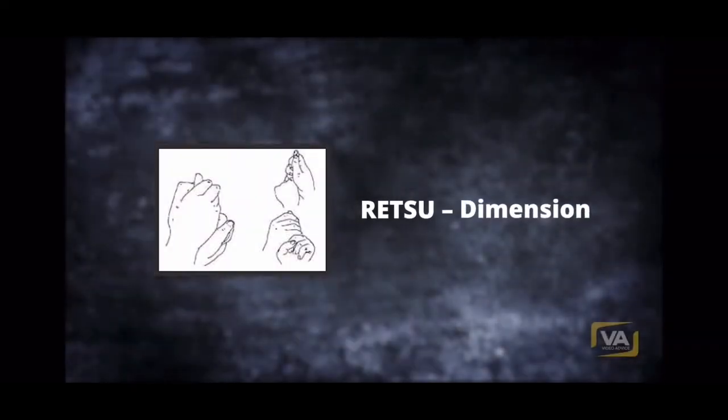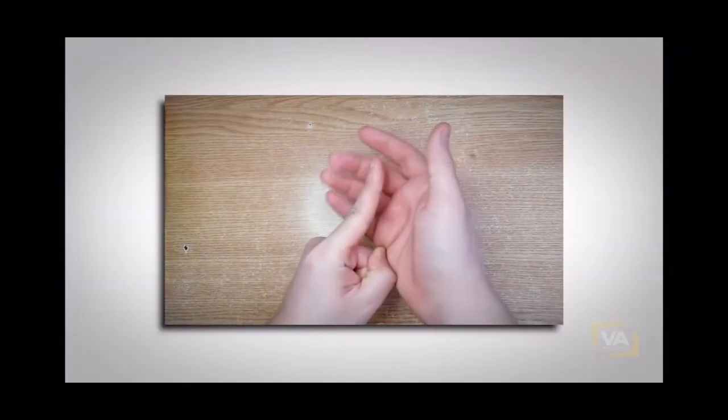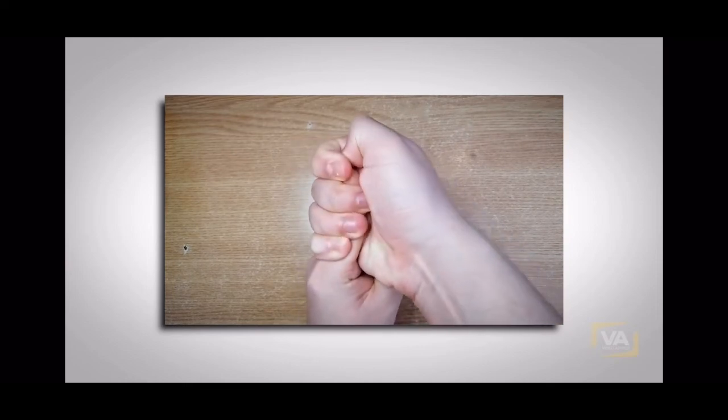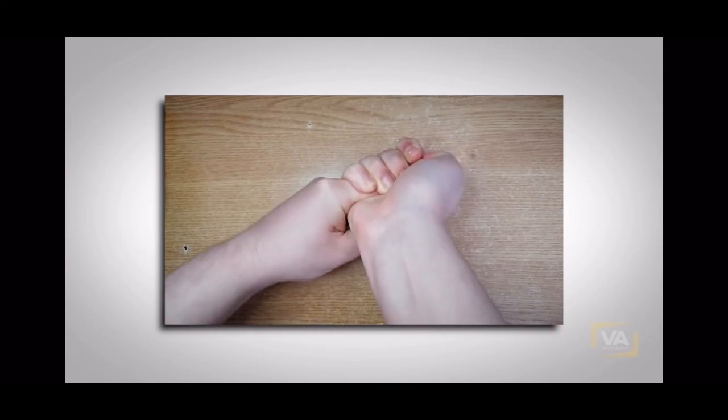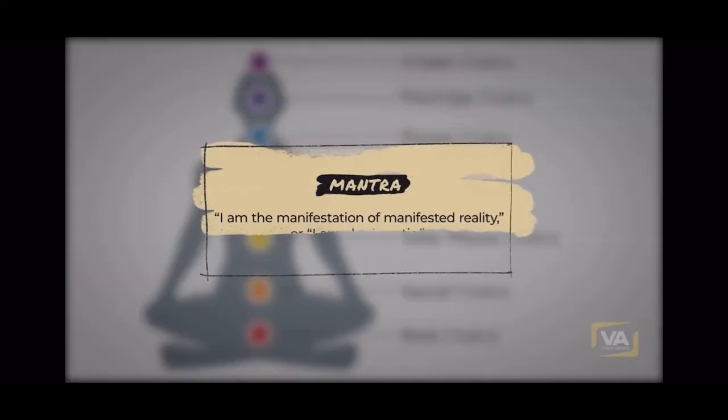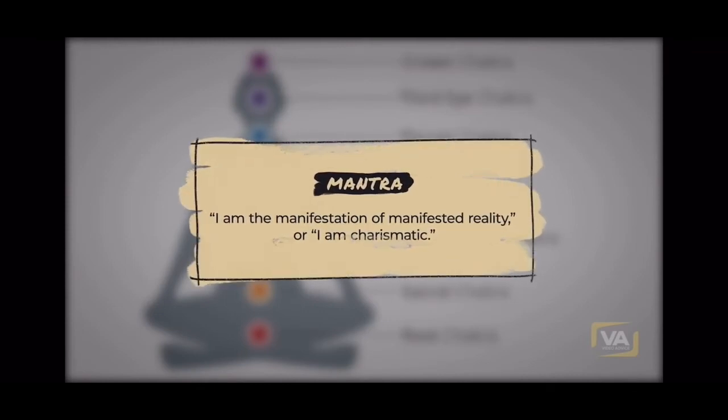Retsu. Dimension. The idea is that all matter is composed of energy waves that are continuously recreated throughout the universe. Visualizing this recreation alters the perception of time. The visualization point is at the top of the head. Mantra: I am the manifestation of manifested reality. Or, I am charismatic.